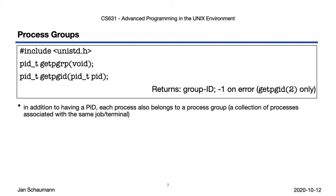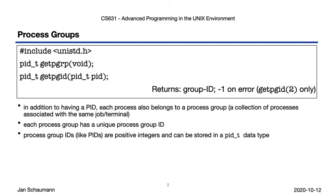How do we define a process group? A process group is, generally speaking, a collection of processes within the same job or terminal. Process groups are identified, just like process IDs, via a process group ID. These process group IDs are small, non-negative integers uniquely identifying a process group, and can in fact be stored in a pid_t data type. You can get your current process group ID by calling the getpgrp system call, or determine any process's process group ID via getpgid.